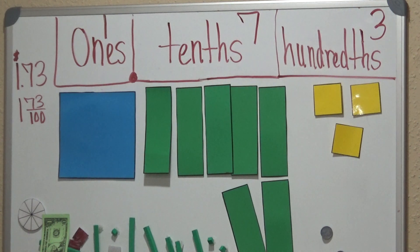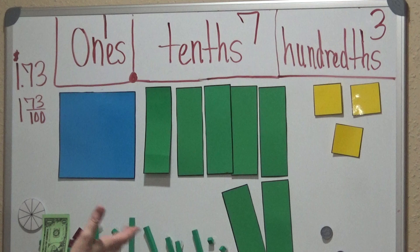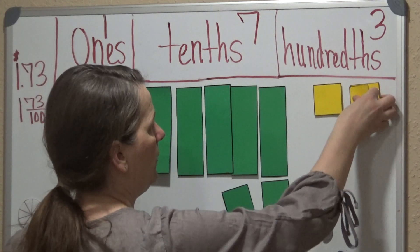So that's representing with including tenths and hundredths, using concrete and visual models. This is a visual model. I'm going to go ahead and take it away.